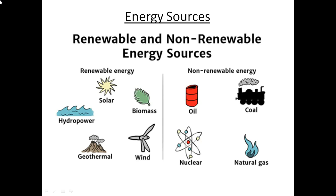For example, solar energy — the sun is going to exist for at least a million years, so we won't be having any problem with respect to solar energy. Similarly, biomass is infinite, and there is wind energy, geothermal energy, and tidal or hydropower energy. All these come under renewable energy sources.